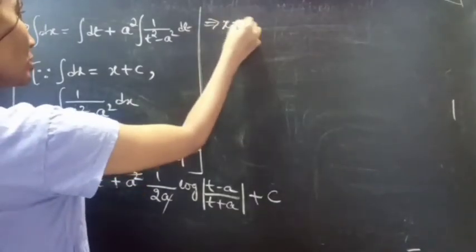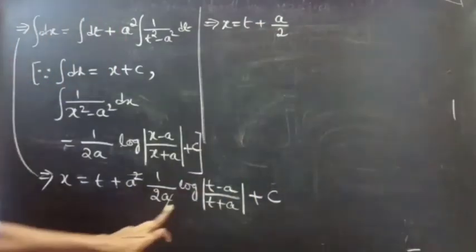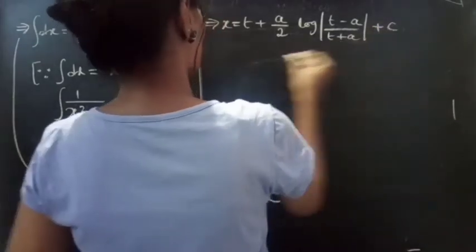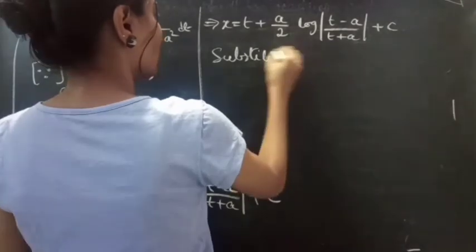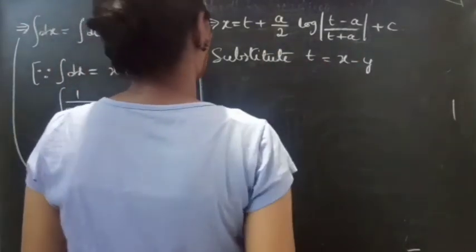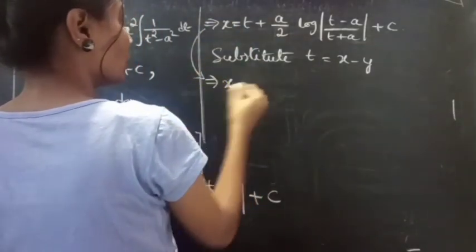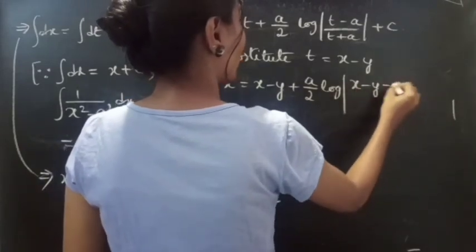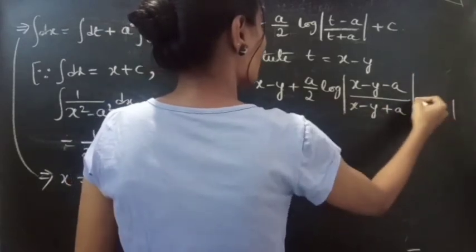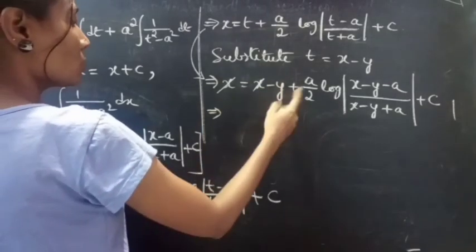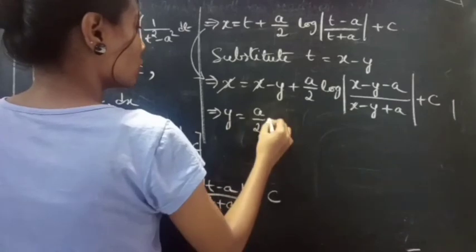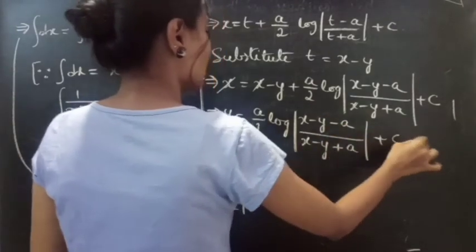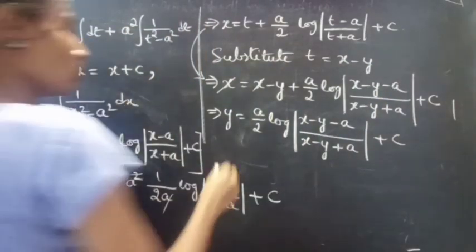This becomes x equals to t plus a by 2 into log mod (t minus a) by (t plus a) plus c. Now substitute t equals to x minus y. Then x equals to (x minus y) plus a by 2 into log mod (x minus y minus a) by (x minus y plus a) plus c. Here x gets cancelled, and taking y to the left hand side, we get y equals to a by 2 log mod (x minus y minus a) by (x minus y plus a) plus c, which is the required solution for the given differential equation.